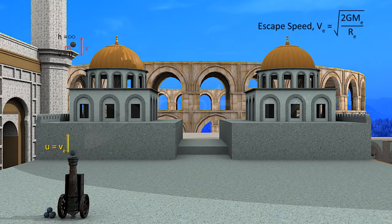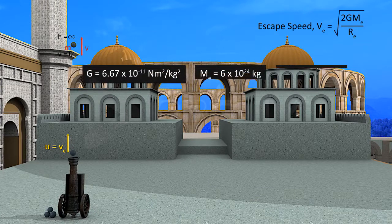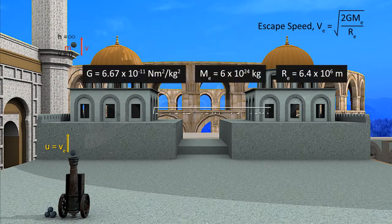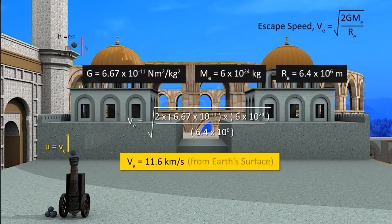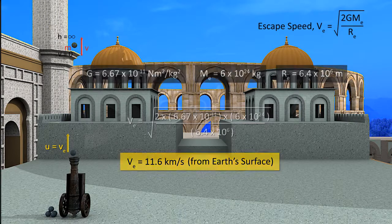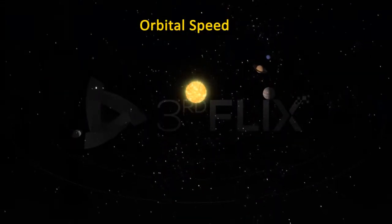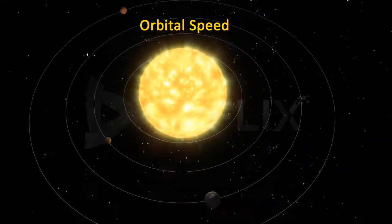By substituting the values of G, Mₑ, and Rₑ, we get the escape speed from Earth's surface as 11.6 km per second.